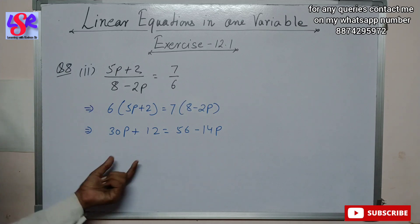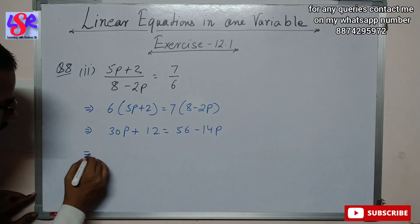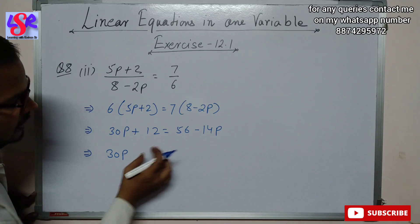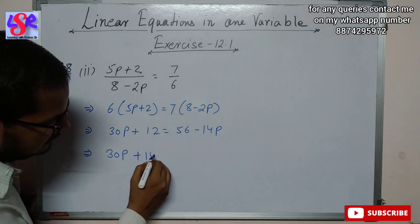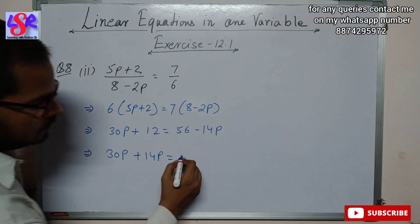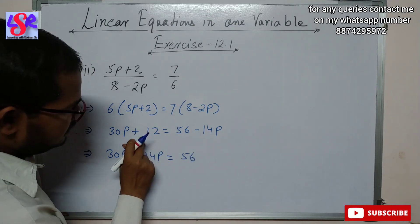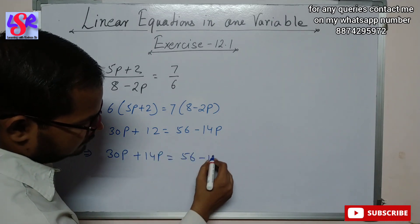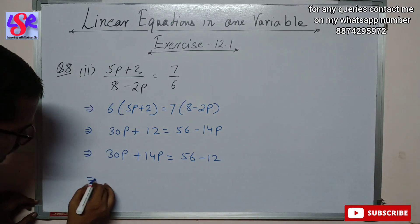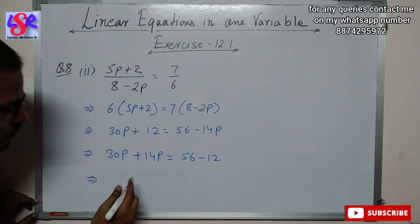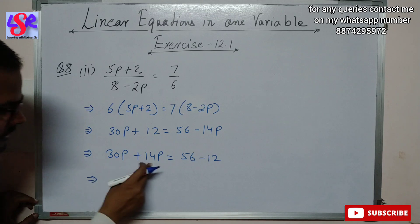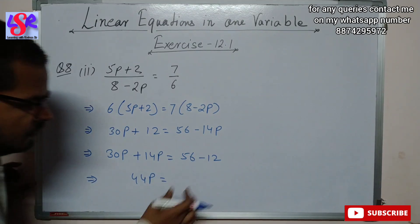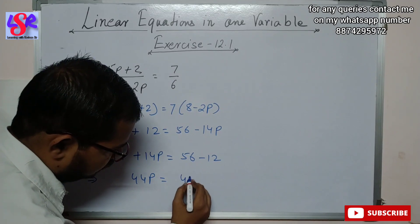Putting all variables on the same side: 30p + 14p = 44p, and the constants: 56 - 12 = 44. So we get 44p = 44.